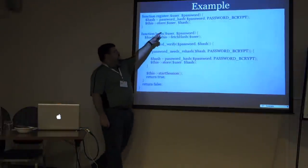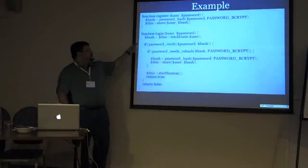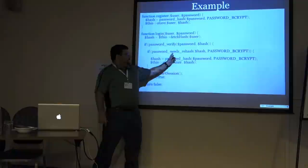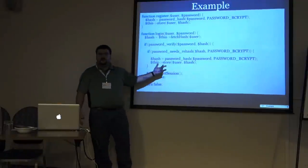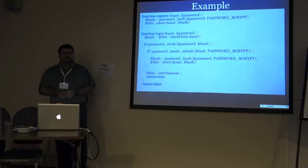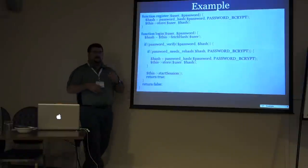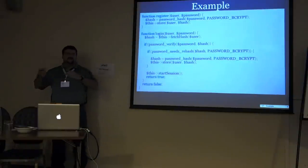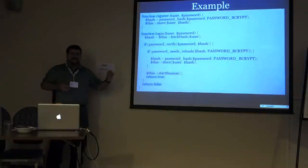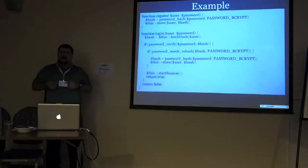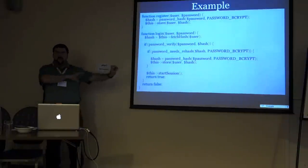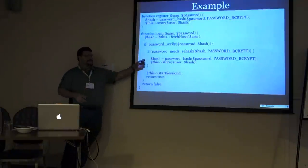An example: you have a register function, you hash the password with one line, and store it. When you log in, you get the hash, verify it, and if it needs rehashing, you rehash it and update the user. Otherwise, you're logged in. If password_verify returns false, you're not logged in. We aim to be as simple as possible. People ask why it's not a class or object — the point is I want proper password hashing to be as easy as using md5(). That way no one can make the excuse it was too hard to do.